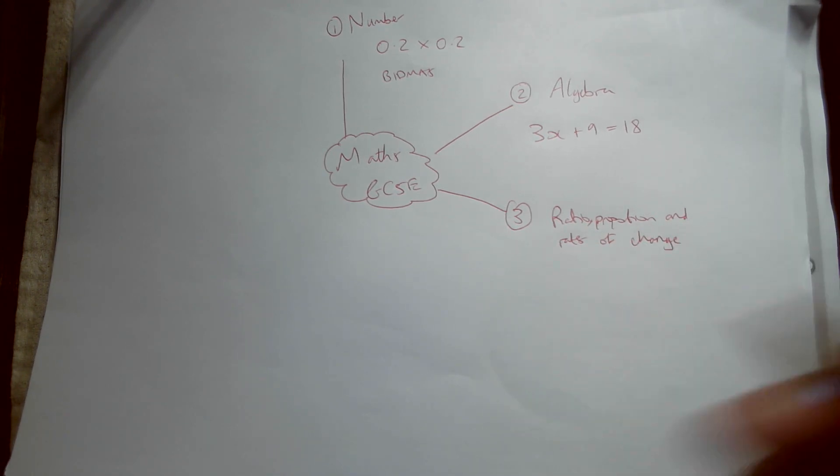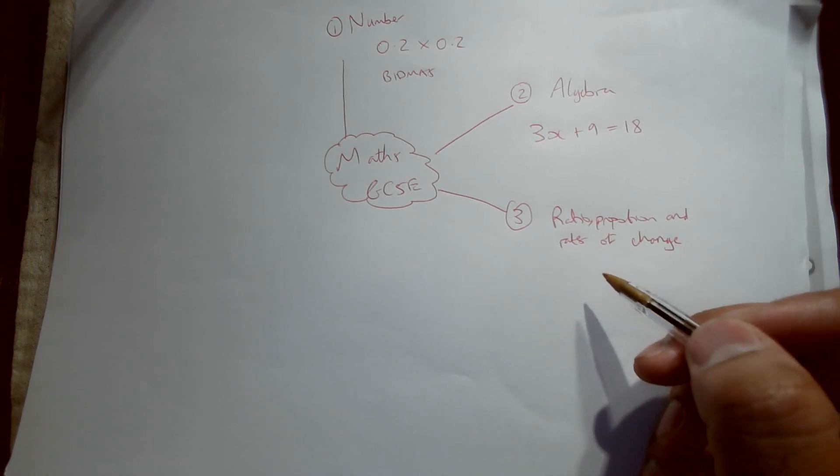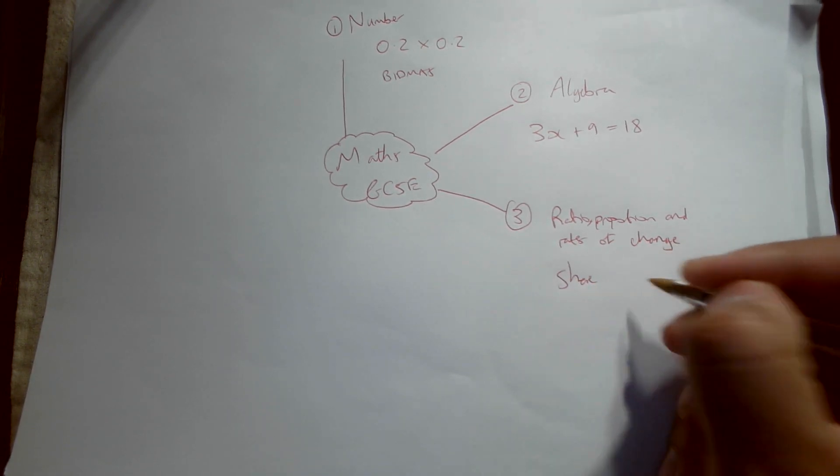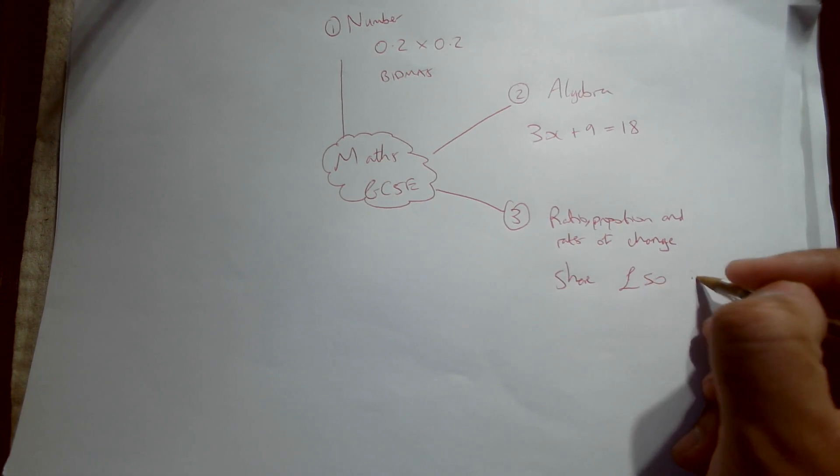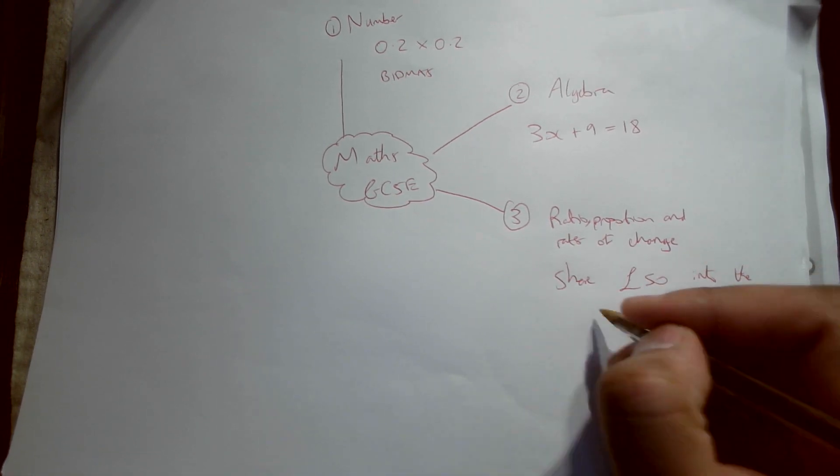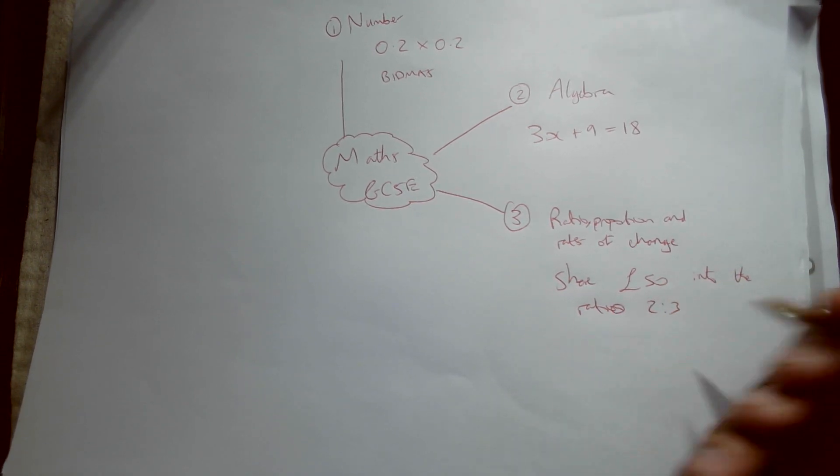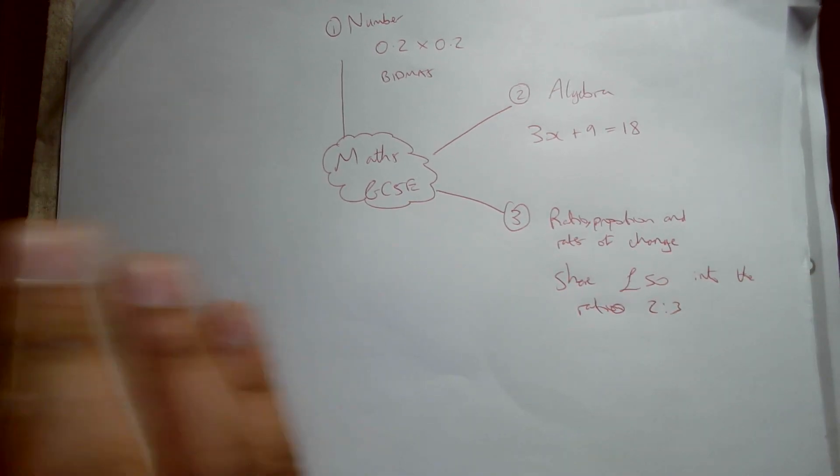So there's lots of different types of questions that can come up in this, but I'm just going to give you a very easy example. So share £50 into the ratio 2 to 3. Okay, something along those lines.